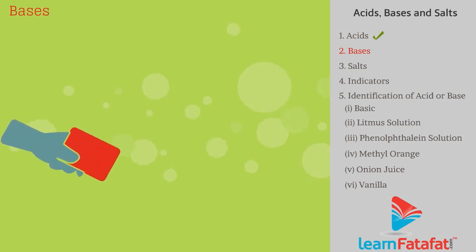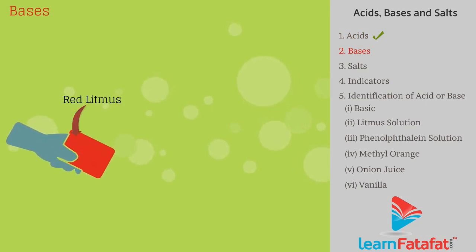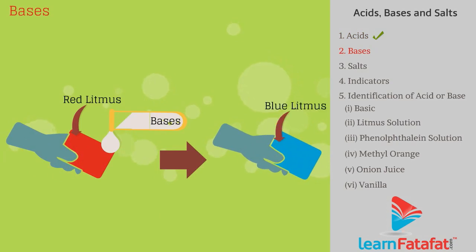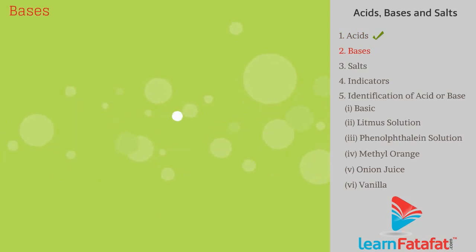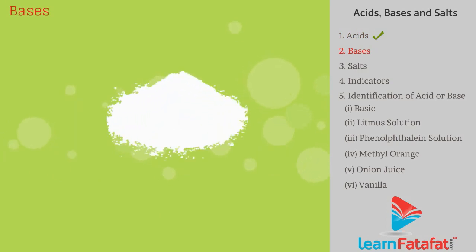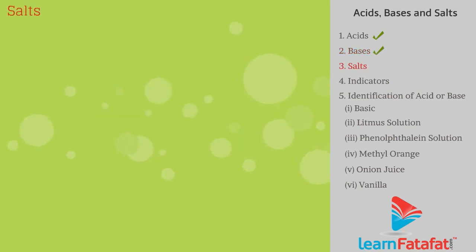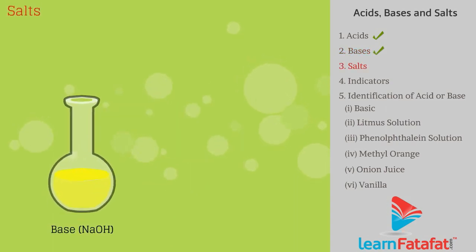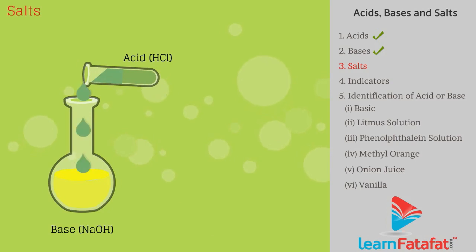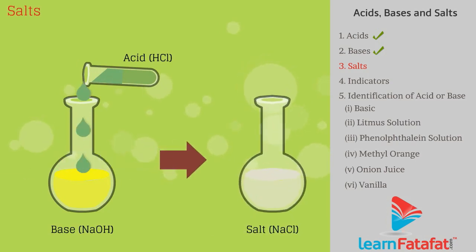Bases are the chemicals that turn red litmus to blue. Bases are bitter in taste. For example, baking soda. Acids and bases react with each other and nullify each other's effect, producing salt.